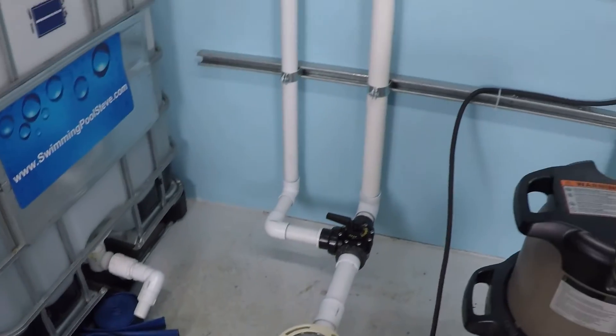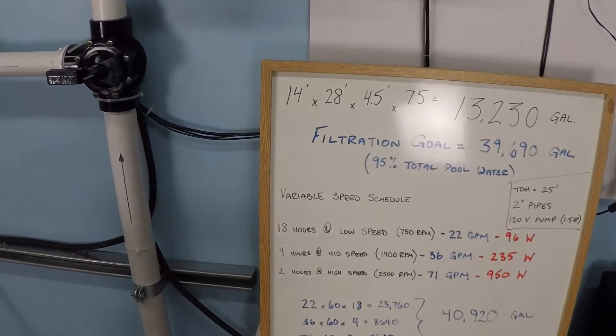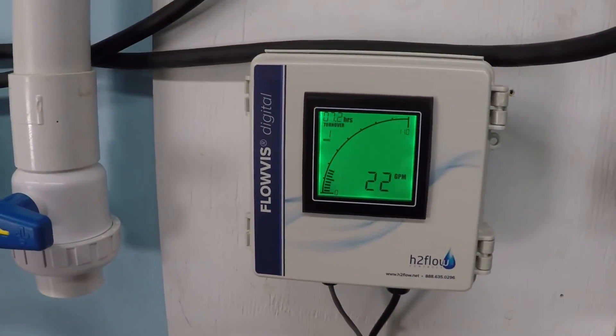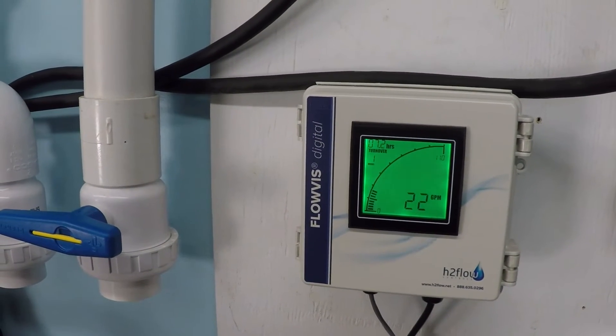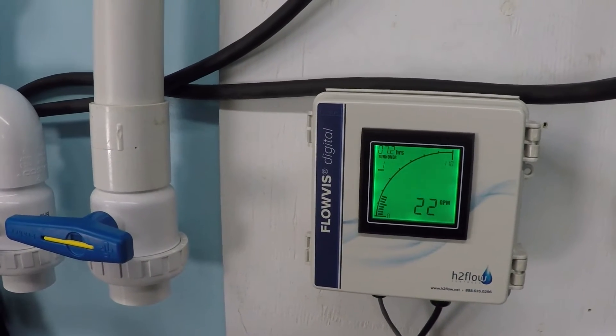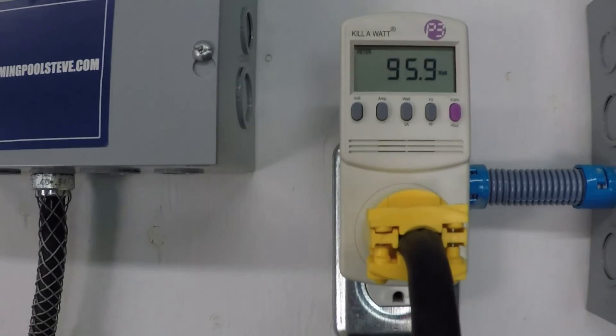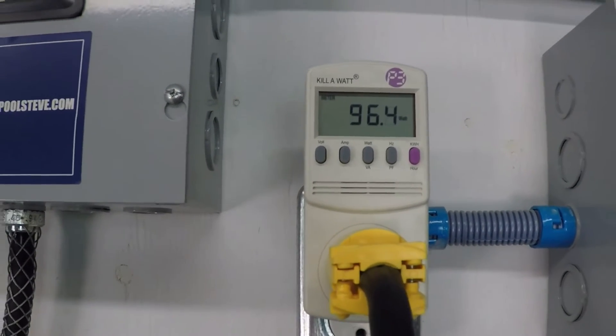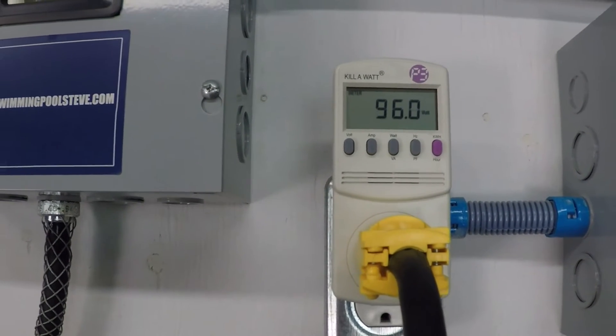750 RPM on this system, which again has a TDH of about 25 feet, is resulting in 22 gallons per minute. 750 RPM is extremely low, but 22 gallons per minute is actually a pretty appreciable number. Especially when you look at the fact that it costs less, in terms of power consumption that is, less than a 100 watt light bulb.